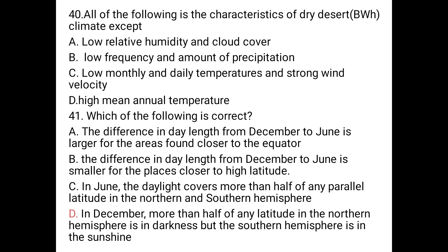Question number 40: All of the following are characteristics of the dry desert climate region except one. A. Low relative humidity and cloud cover. B. Low frequency and amount of precipitation. C. Low monthly and daily temperatures. D. High mean annual temperature with strong wind velocity. There are high monthly and daily temperatures with strong wind velocity, so the answer is C.